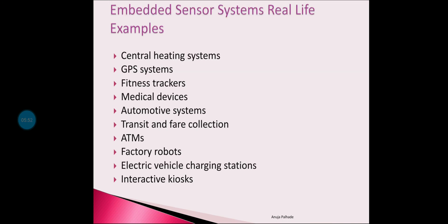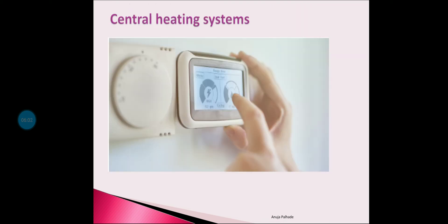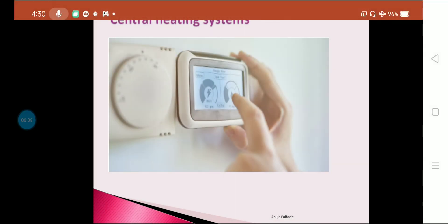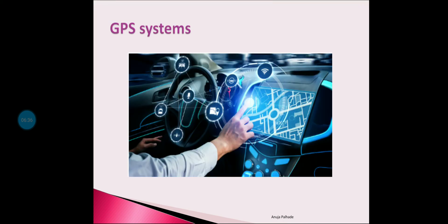Let's see the real-life applications of embedded sensor systems one by one. First is the central heating system, which converts chemical energy into thermal energy in a furnace room and transfers that energy as heat delivered to numerous spaces within a building. These systems require a thermostat to control and adjust the temperature. Examples include office buildings, factories, grocery stores, homes, schools, and hospitals.